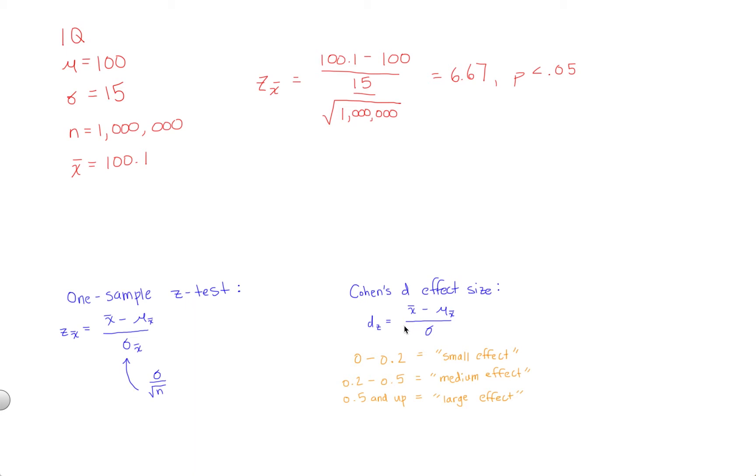But that's statistical significance. Let's now look at practical significance. Should we care? So let's calculate the effect size here. Remember how we interpret effect sizes. Anything between 0 and 0.2 is considered a small effect. Between 0.2 and 0.5 is considered a medium effect. And 0.5 and larger is considered a large effect.